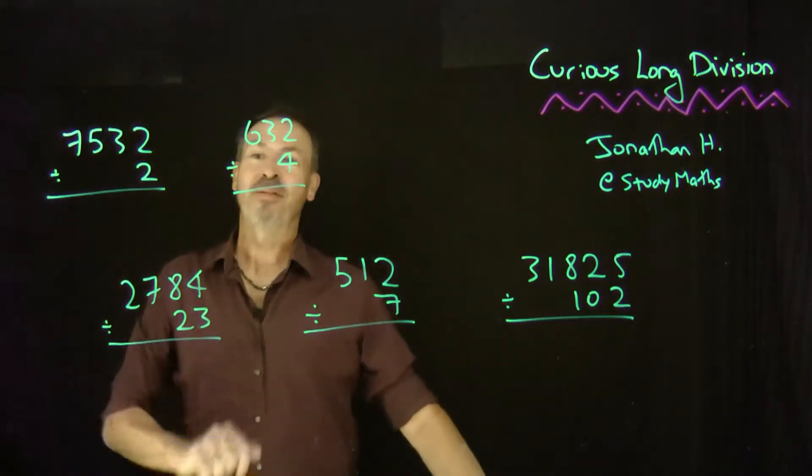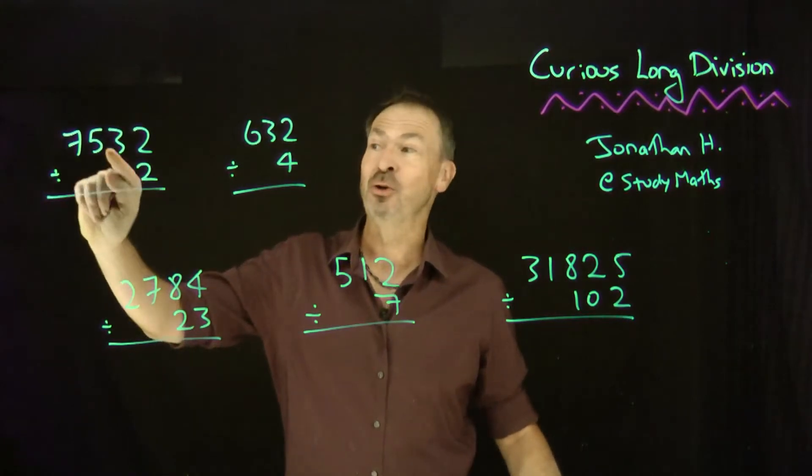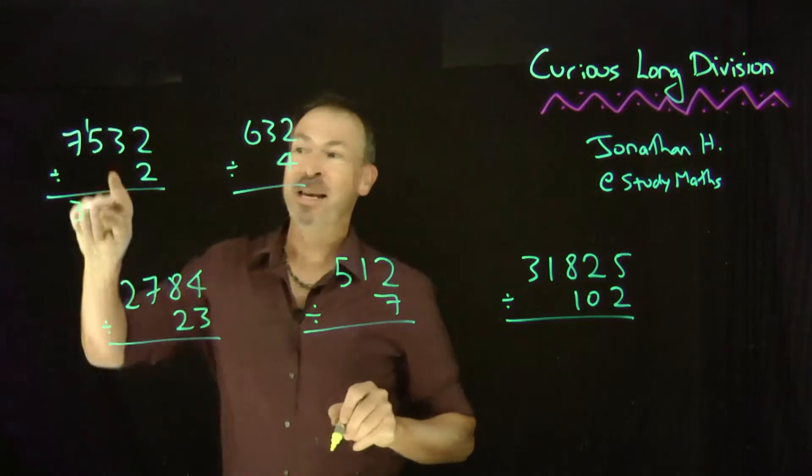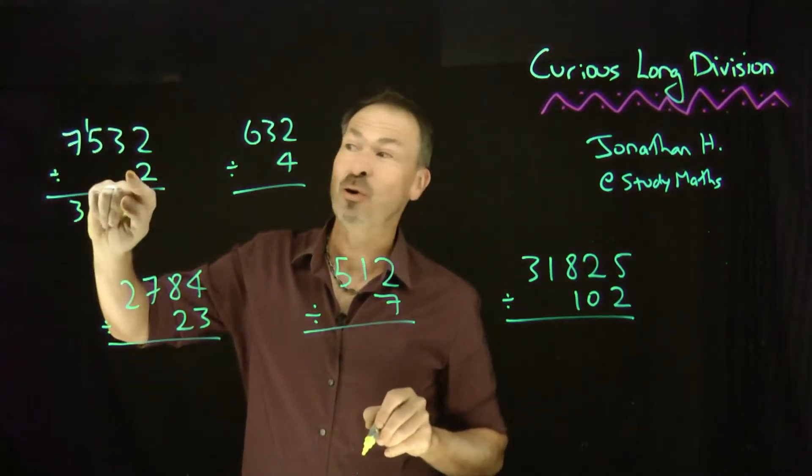To work out 7532 divided by 2, look at the first digit. How many times does 2 go into 7? It goes 3 times with a remainder of 1. But now read that as 15 and ask how many times does 2 go into 15?